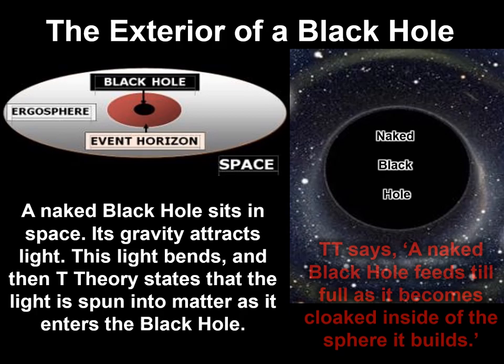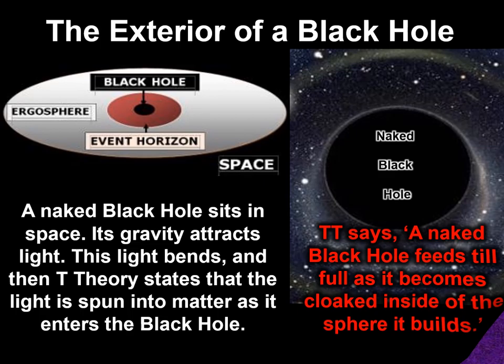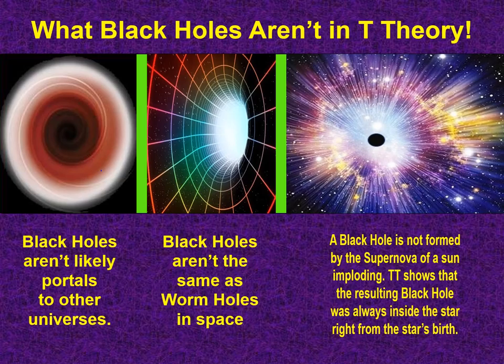Its goal is to attract and devour tons of light. Trillion Theory discloses how and why we look at the exterior of a black hole. A black hole sits in space, its gravity attracts light, this light bends, and then Trillion Theory states that the light is spun into matter as it enters the black hole. A naked black hole feeds till full as it becomes cloaked inside the sphere it builds.